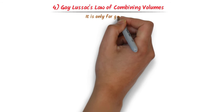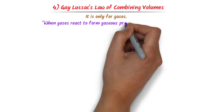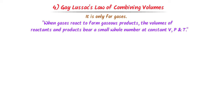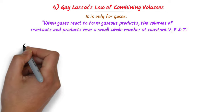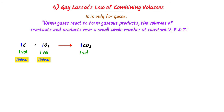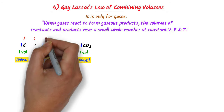The fourth law is Gay-Lussac's law of combining volumes. This law is only valid for gases. It states that when gases react to form gaseous products, the volumes of reactants and products bear a small whole number ratio at constant pressure and temperature. For example, carbon plus oxygen gas forms carbon dioxide gas. The coefficients represent volumes: 1 volume of carbon reacts with 1 volume of oxygen to form 1 volume of carbon dioxide — a ratio of 1:1:1.